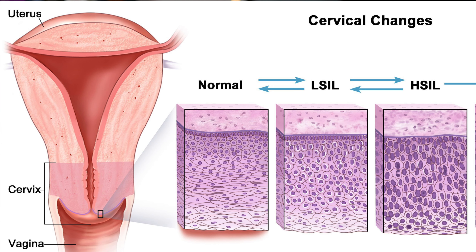Let's do a quick anatomy and terminology review. I'm putting up a picture showing the uterus and the cervix on the lower part of the uterus. This is where we perform the brushing and HPV testing for cervical cancer screening.